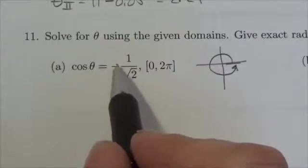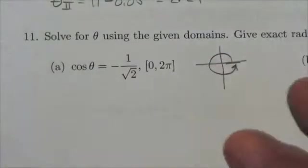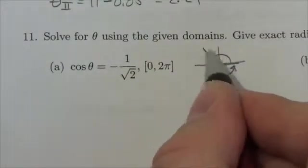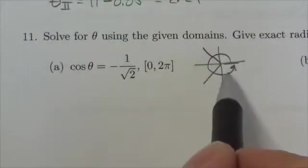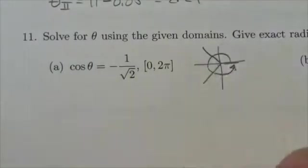Cosine of theta is equal to a negative ratio. Now let's think. Cosine is negative in quadrants 2 and 3. So those are the two angles I'm looking for. Follow the arrow around here. That's what I'm looking for.